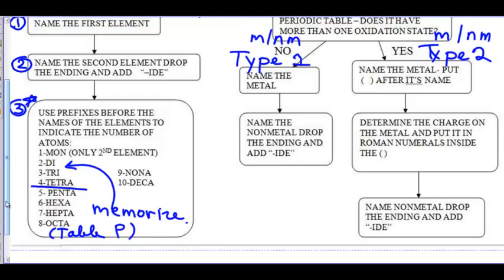Let's say we had CCl4. This is a non-metal and this is a non-metal. You would name the first element first, that's carbon. You'd name the second element, leave a little space, drop the ending, and add ide, chloride.